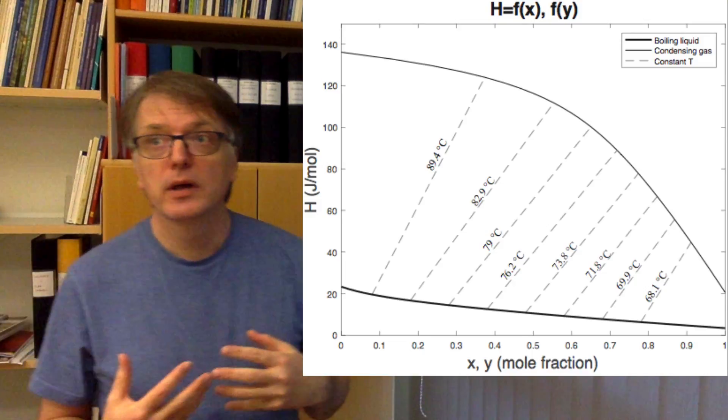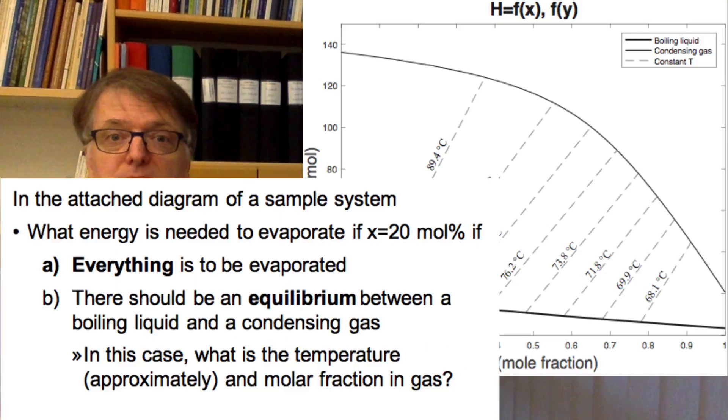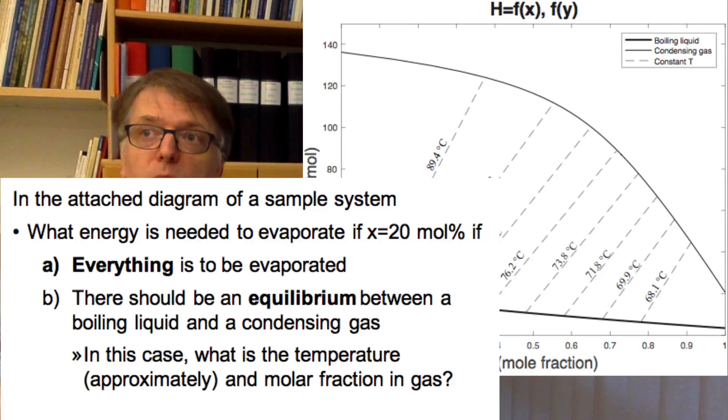So in this diagram here, what energy is needed to evaporate a liquid if the composition in the liquid is 20 mole percent, and (a) everything is to be evaporated, and (b) if there should be an equilibrium between a boiling liquid and a condensing gas, and the liquid should have 20 mole percent ethanol.